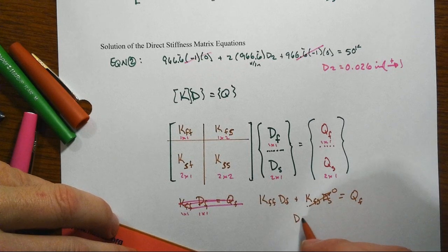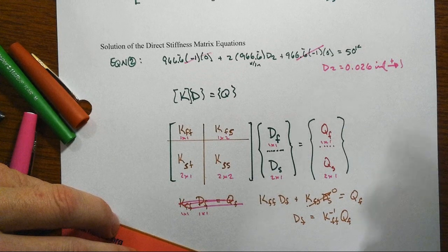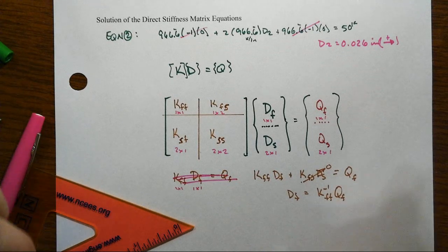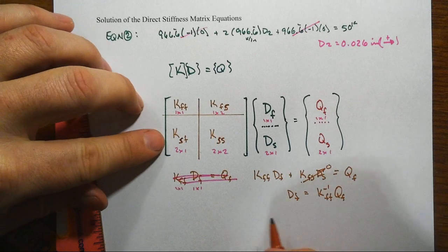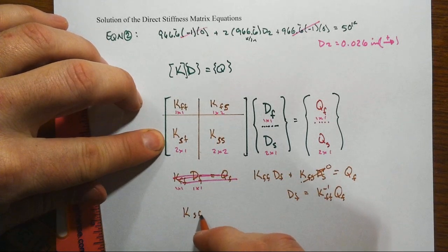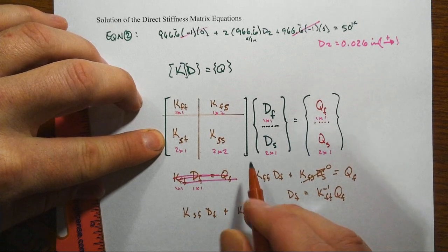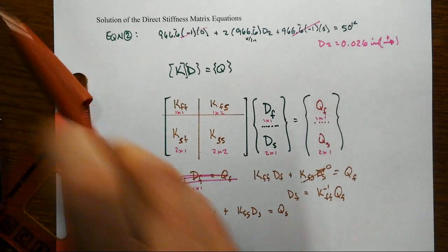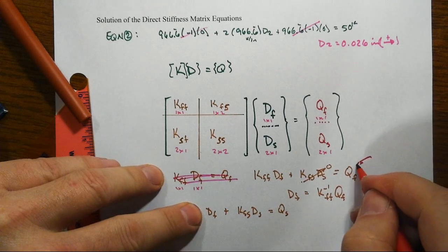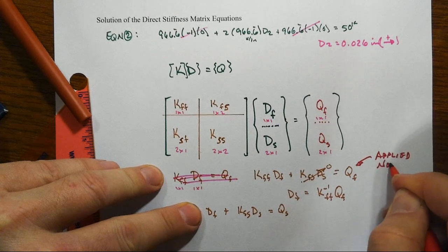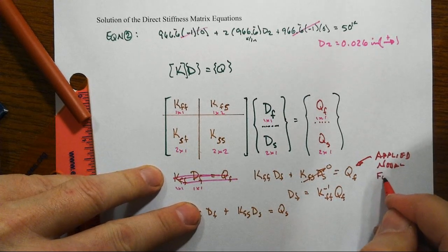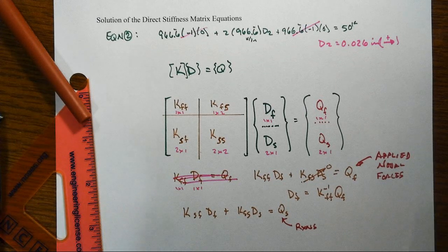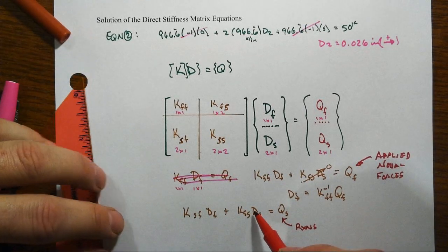That does mean that Df is going to be equal to the inverse of KFF times Qf. That's how your computer program is really solving these things. Then you can come back to here, and we've got that KSF times Df plus KSS times Ds is going to be equal to Qs. Keep in mind what was going on here: these were the applied nodal forces, and Qs are the reactions.